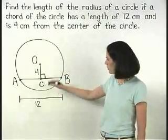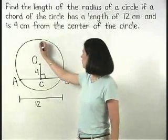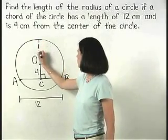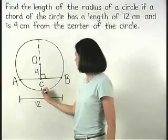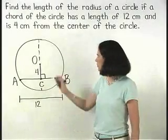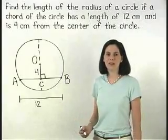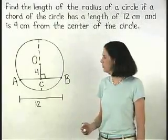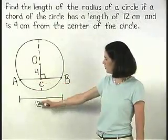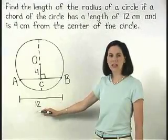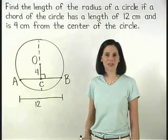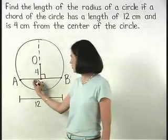Now notice that segment OC is part of a diameter of the circle. And remember that if a diameter of a circle is perpendicular to a chord then it bisects the chord. So segment AB which has a length of 12 is split into two congruent segments each with a length of 6.